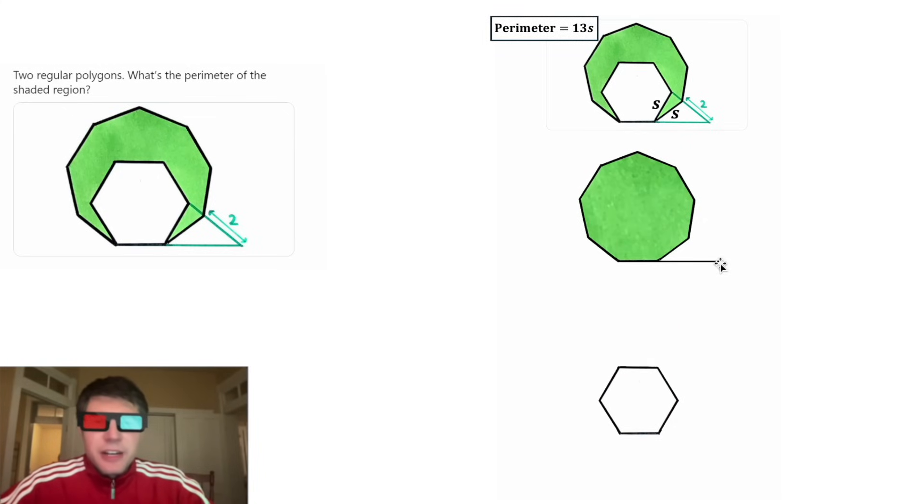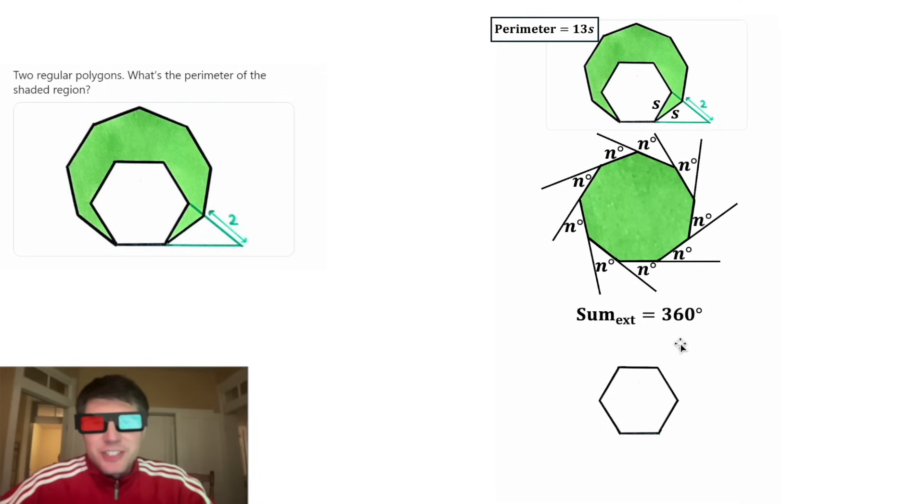If we extend this side right here, this is called an external angle. Now let's call it N degrees where N stands for nonagon, because that's the name of this polygon. And then if we look at all of these external angles, they're all gonna be equal to each other. They will all be N degrees.